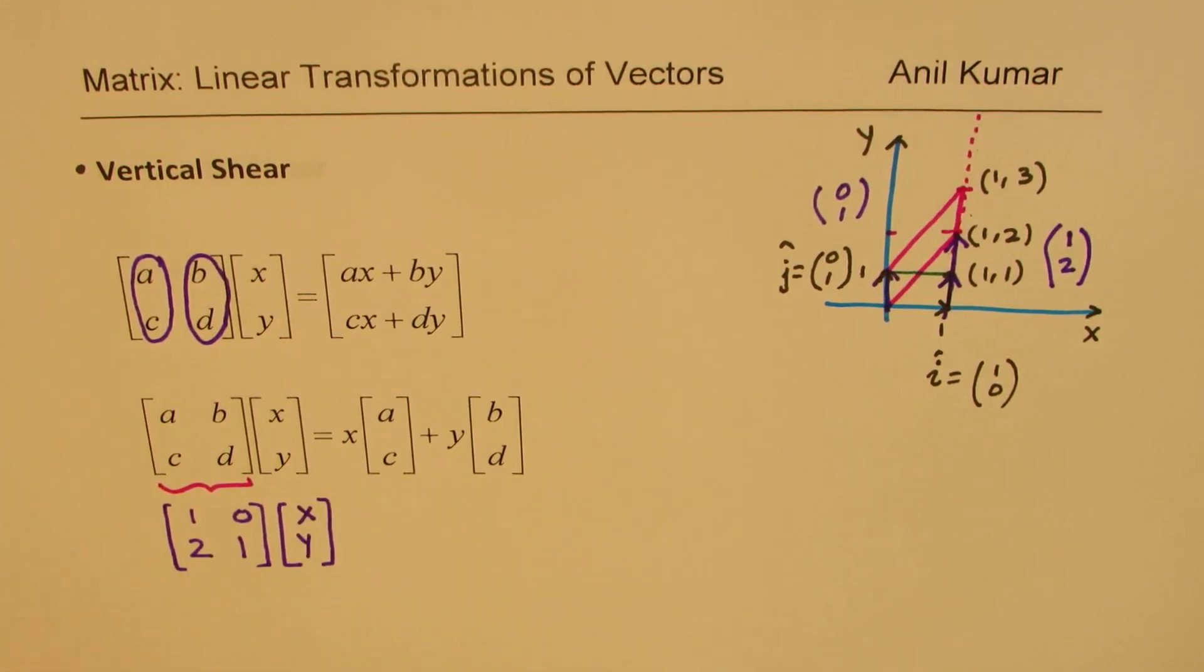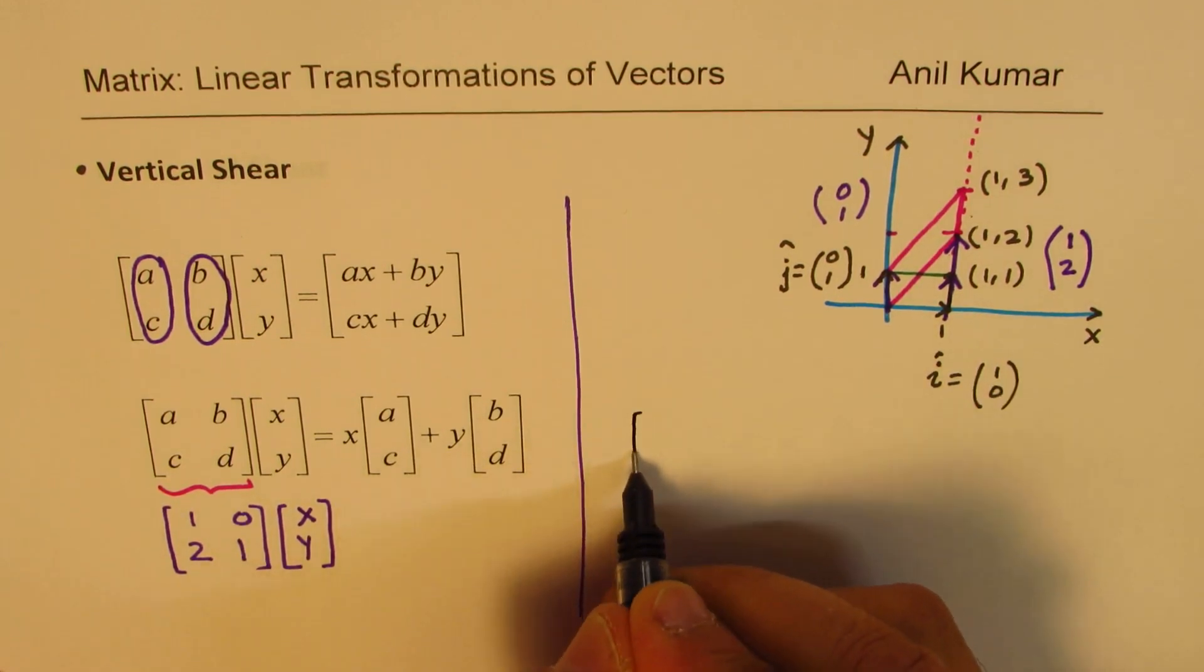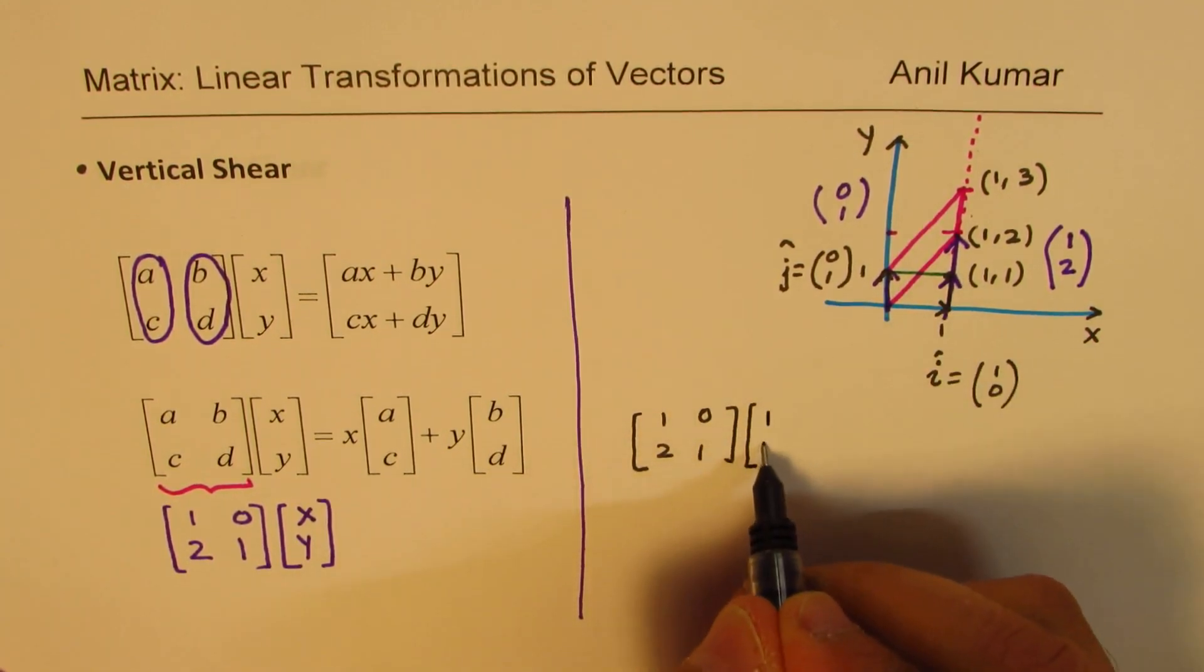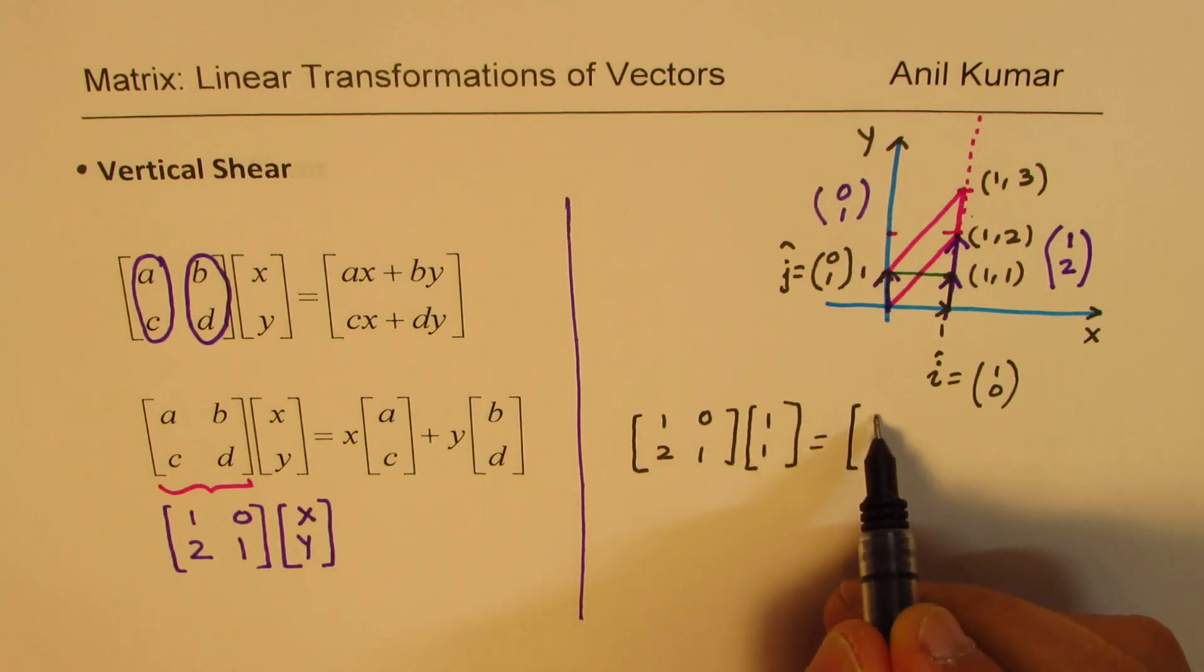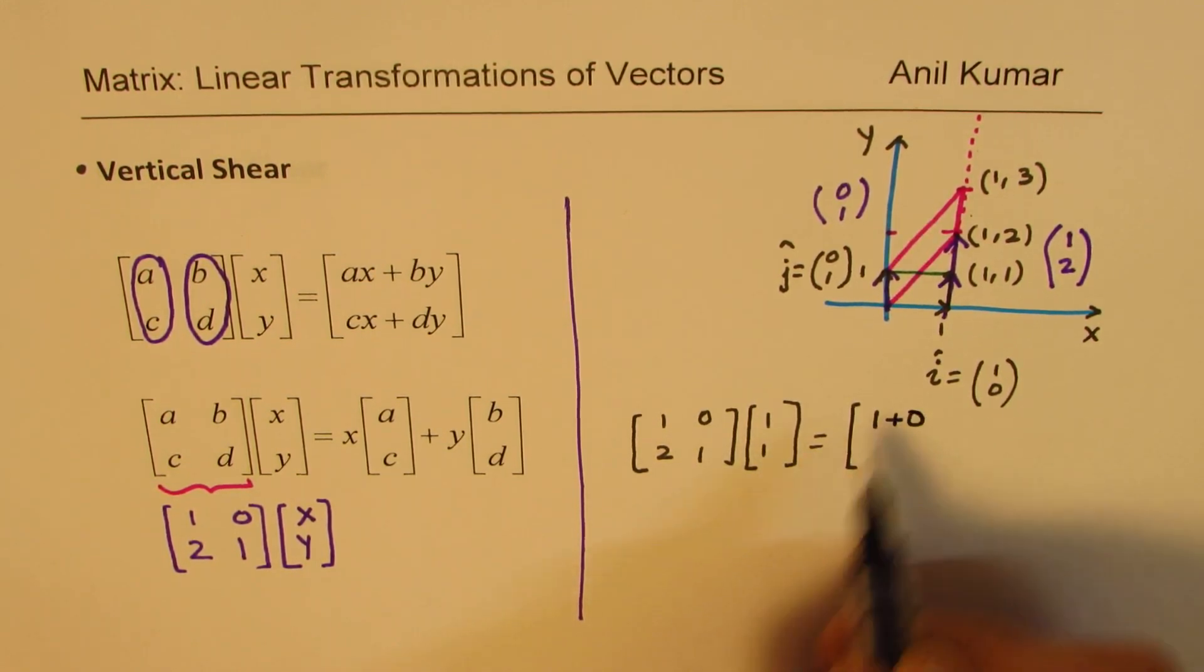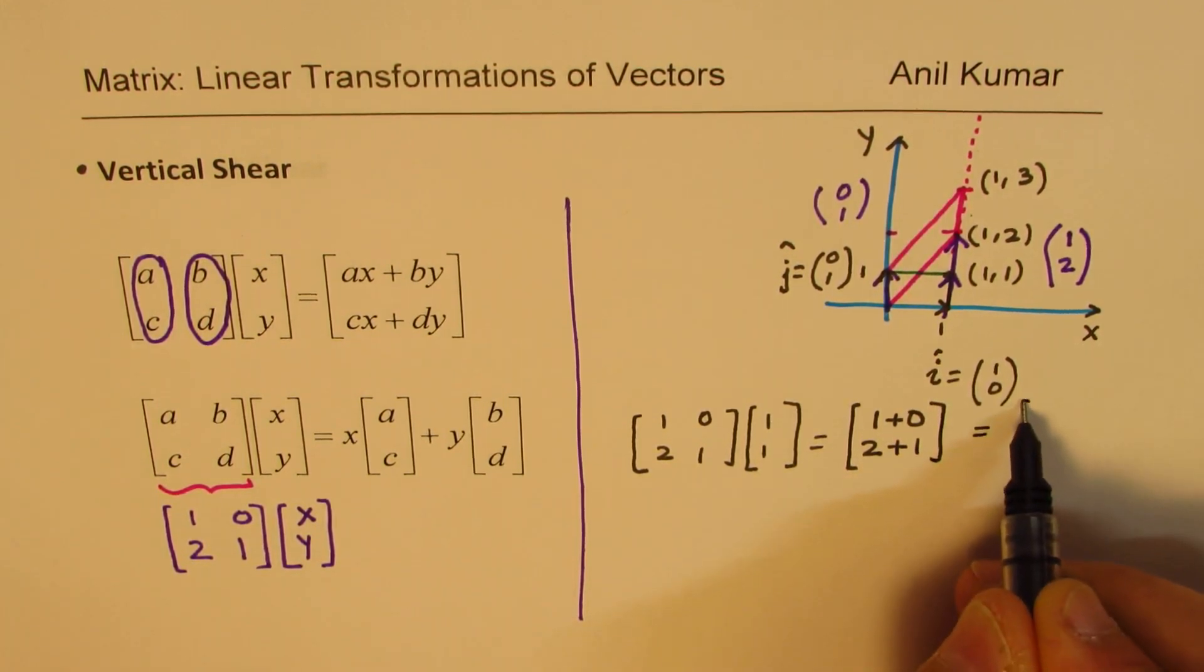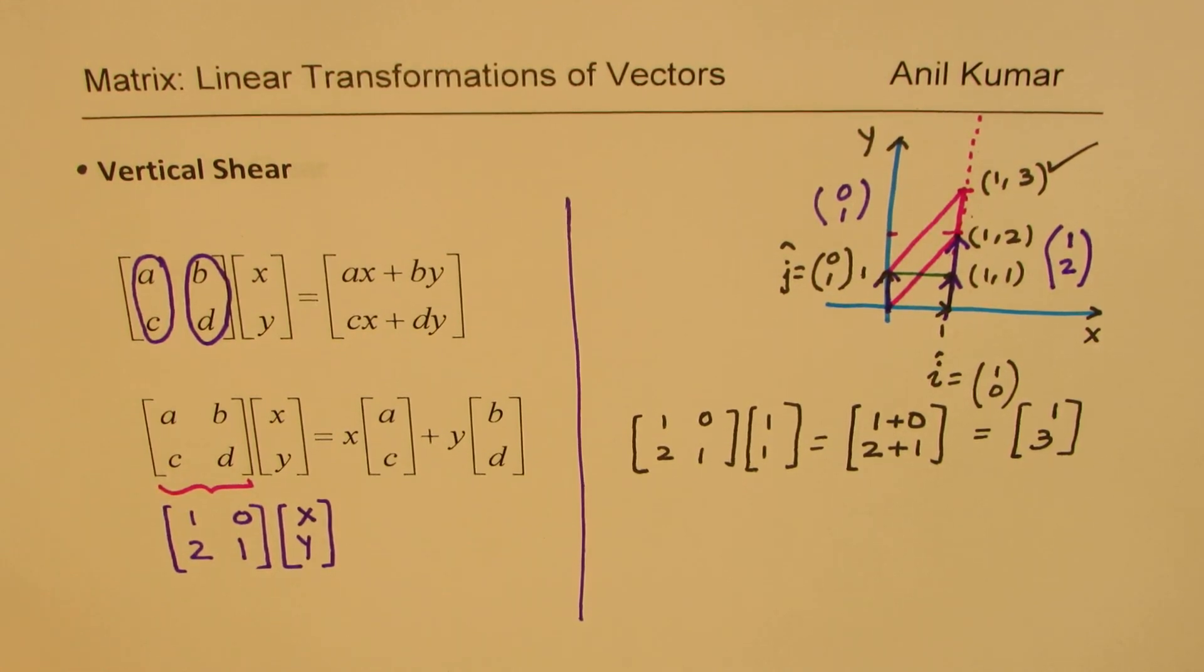So we are saying that is the transformation matrix. So let's test it out. So we'll apply this to the point 1,1. So what do we get? We get [1 2; 0 1]. That is our new transformation matrix. And we are applying it to the point 1,1. So the new coordinate point after transformation should be 1 times 1, which is 1, plus 0 times 1, which is 0. And then when you do it with 2, we get 2 times 1, which is 2, plus 1 times 1, which is 1. So what we get here is 1,3. And that is what it is. So it works. Now you can test this out for many points. You can just create on your own and then work it out.